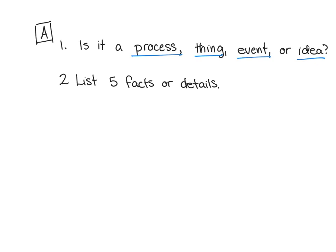The second question asks you to list five facts or details used in the explanation — so in point form, what are the key facts or details they explained? For the third question, you'll decide for yourself whether it was easy to understand. You may have a different answer from your classmates, but you need to include a reason — a 'because.' For example: 'I found it easy to understand because...' or 'I did not find it easy to understand because...' and then give your reason.